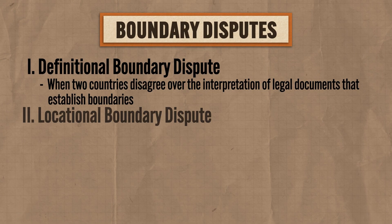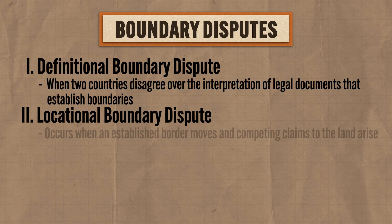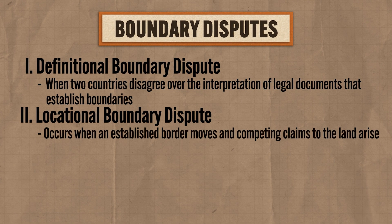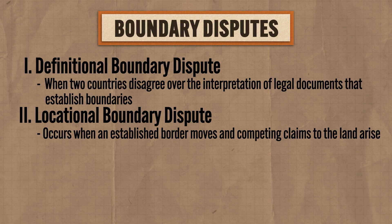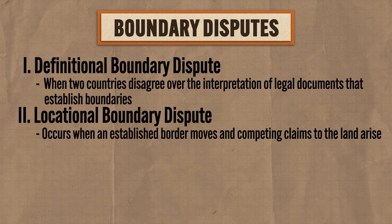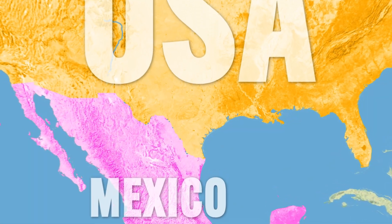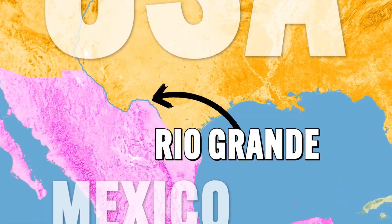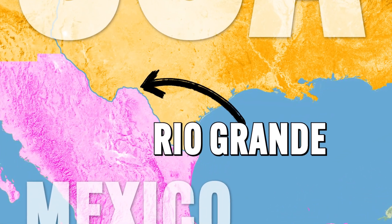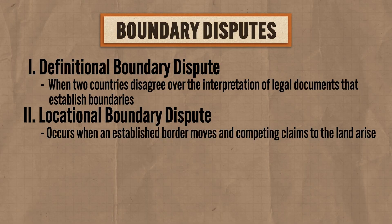Second is a locational boundary dispute, which occurs when an established border moves and competing claims to the land arise. For example, the border between Mexico and the United States is in part made up of the Rio Grande. But over the course of time, that river has changed paths, and that has led to some fighting over who gets to claim the territory of the changing boundary.